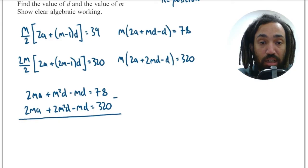I'm going to subtract up. So 2M squared D minus M squared D is just 1M squared D and 320 minus 78 is 242.